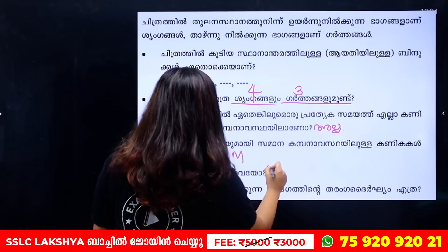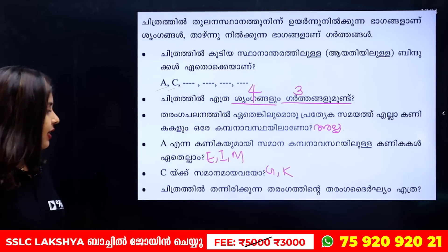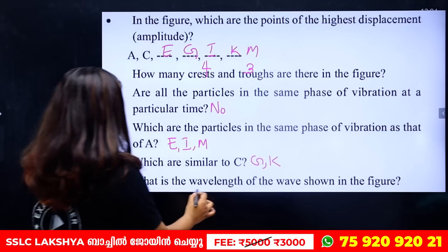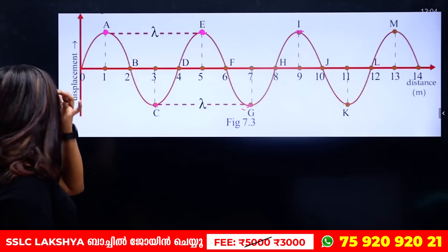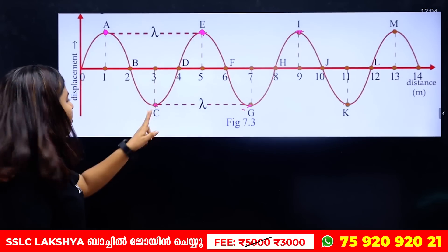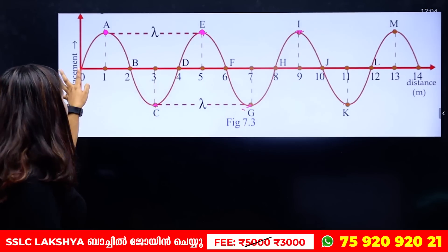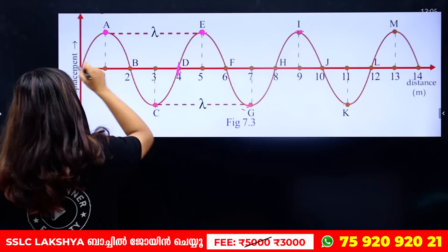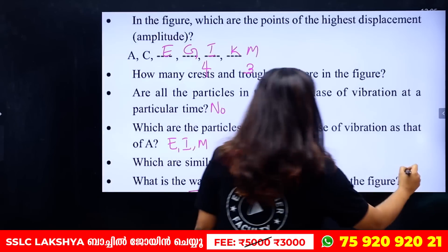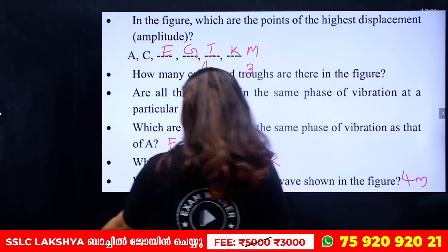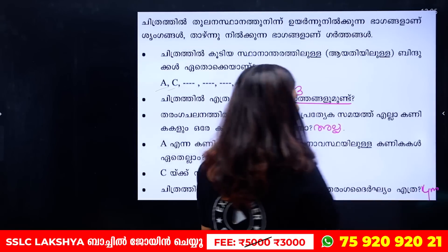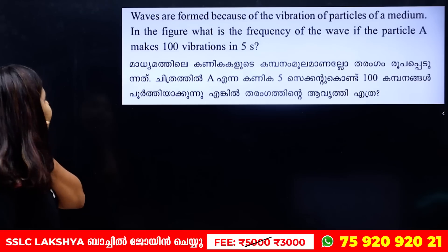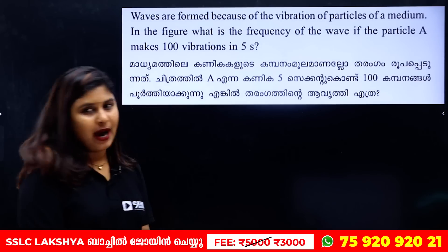The particles in the same phase share the same position and motion at the same time. We have two crests and troughs separated by one wavelength. You can write the wavelength as 4 meters — that's 4 meters.